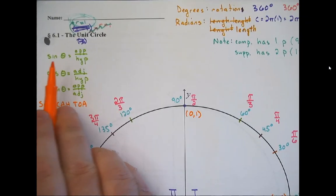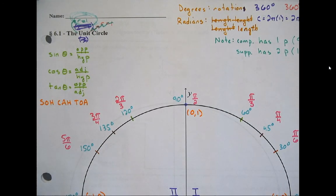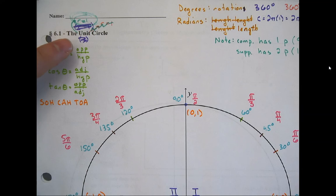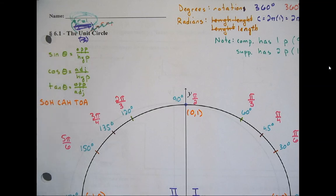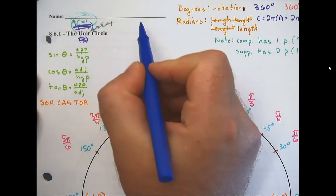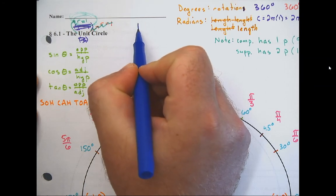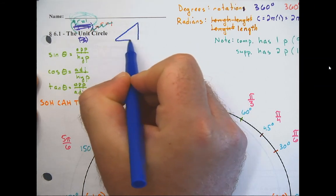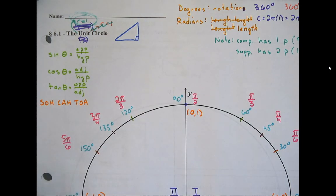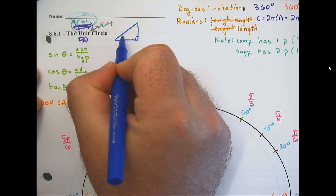A trig function is just a ratio of side lengths of a right triangle. You could take any right triangle, and if you wanted to figure out the sine of the reference angle — the angle you're working from — you take the opposite side length and divide it by the hypotenuse, which is always opposite the 90-degree angle. Let's draw that in now — just draw any random right triangle. This angle here I'm going to call the reference angle, theta.